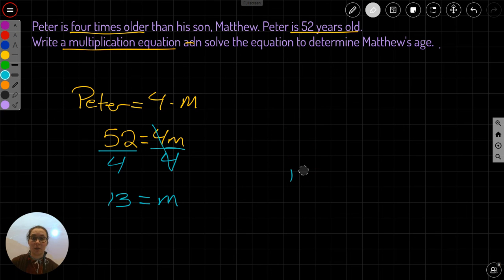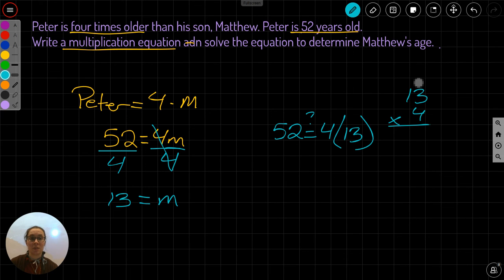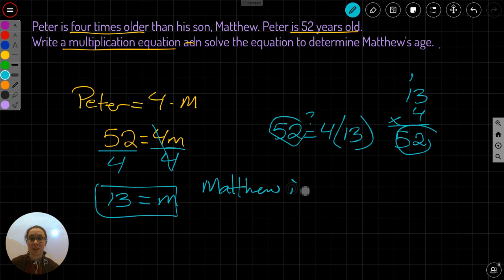Let me erase my working out here and write 52 equals 4 times 13, question mark. Well, 4 times 13—3 times 4 is 12, 4 times 1 is 4, plus 1 is 5—52. 13 is my answer, so Matthew is 13 years old.